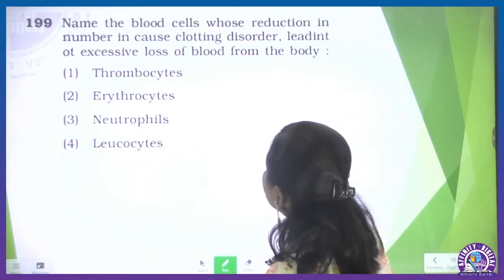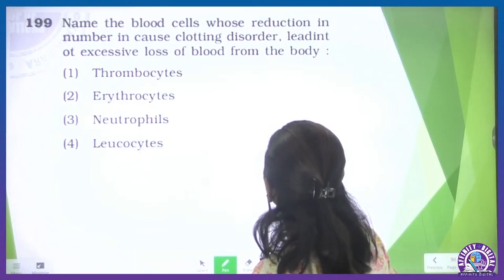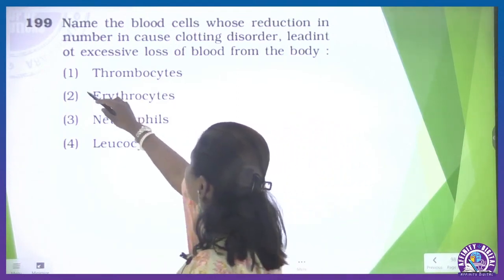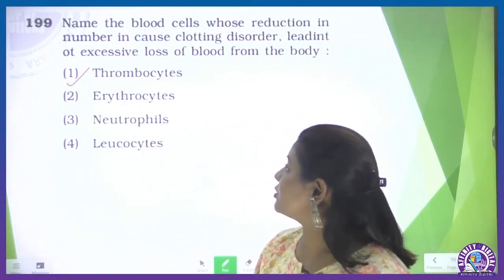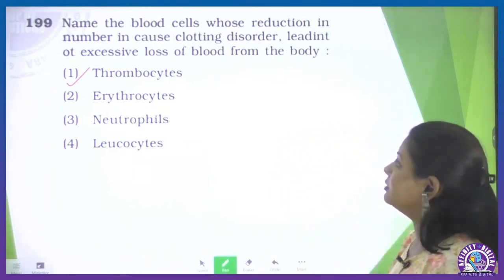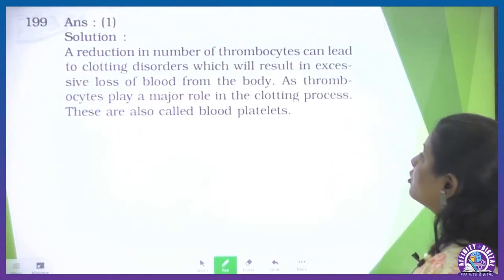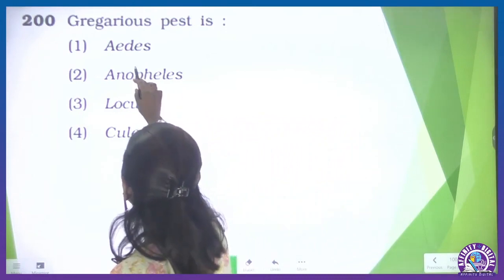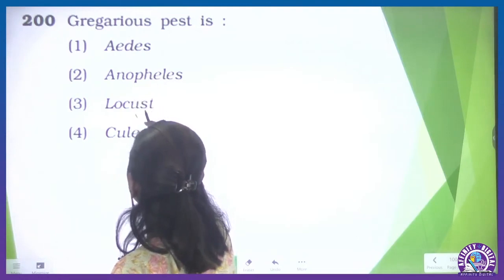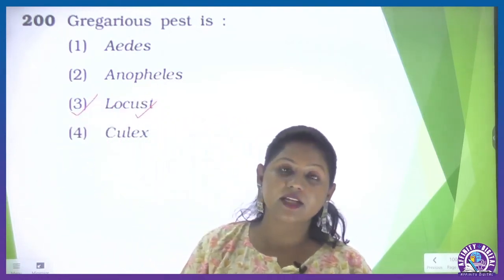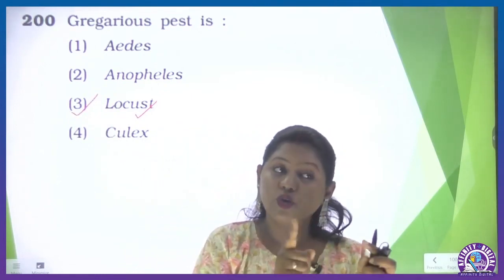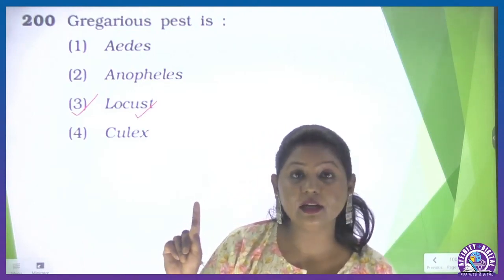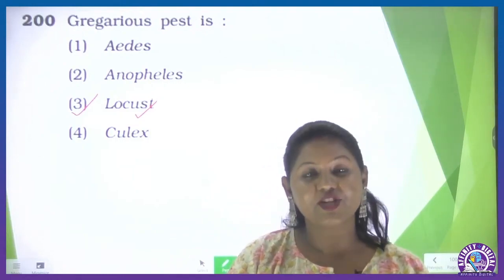Question 199: name the blood cells whose reduction in number can cause clotting disorders leading to excessive blood loss from the body — that is the thrombocyte, that is the platelet. Reduction in thrombocytes leads to blood clotting disorders. Question 200, the last question: gregarious pest — from the animal kingdom — is the locust. Locust lives in colonies but members do not help each other like social insects. They are voracious feeders and greatly affect crops. So locust is our correct option for the gregarious pest, completing our session.